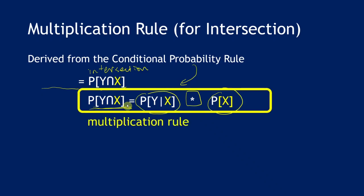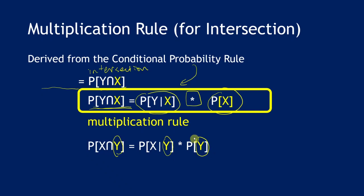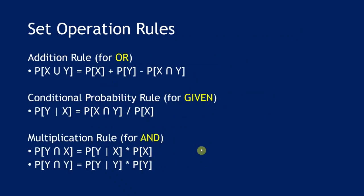We can also express the multiplication rule using y as the condition. The key is that the condition must stay the same across the equation. To summarize, we have seen three set operation rules: the addition rule, the conditional probability rule, and the multiplication rule.